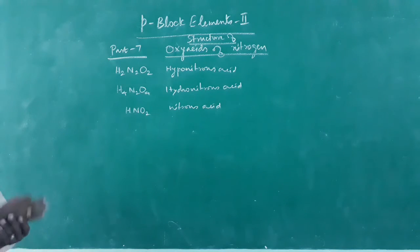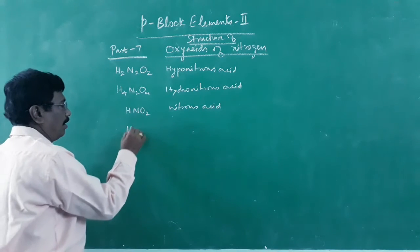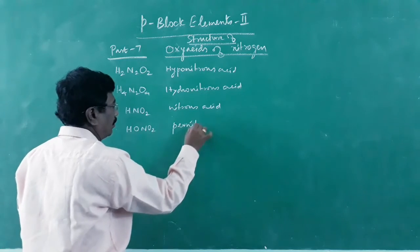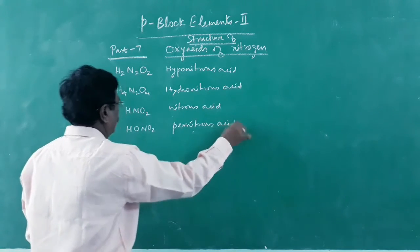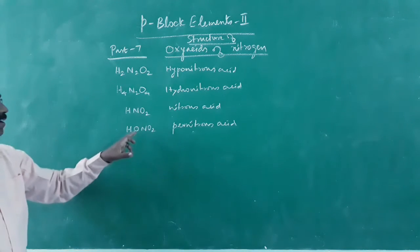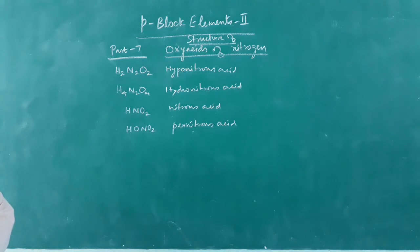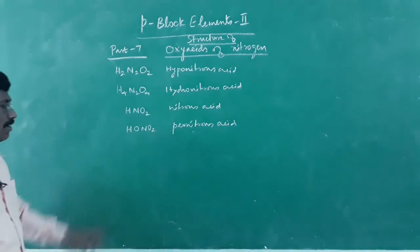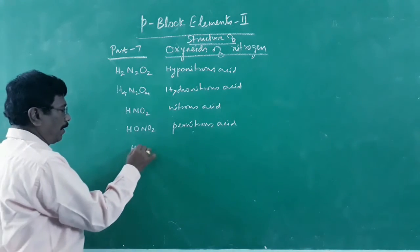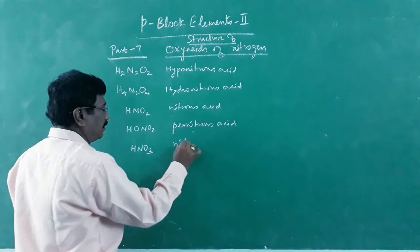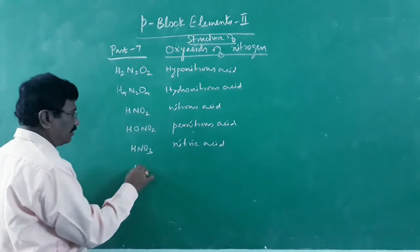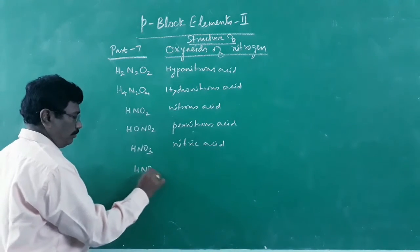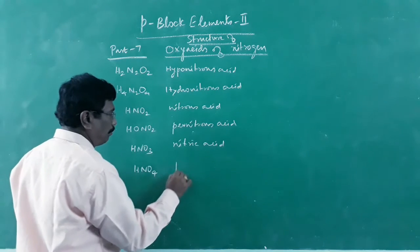When oxygen is added with nitrous acid we call it pernitrous acid, written as HONO2, or more exactly HOONO. Then nitric acid is HNO3. Pernitric acid is HNO4, or more exactly HONO3.